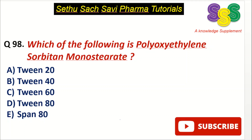Which of the following is polyoxyethylene sorbitan monostearate? A choice: Tween 20. B choice: Tween 40. C choice: Tween 60. D choice: Tween 80. And E choice: Span 80.